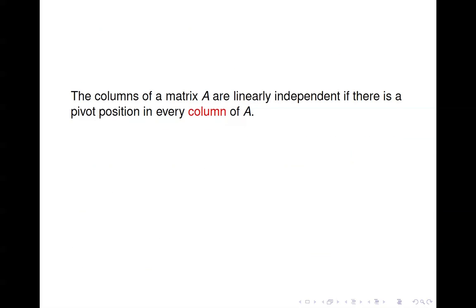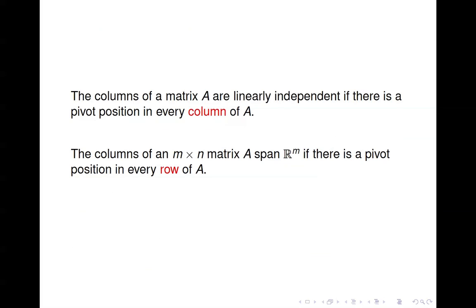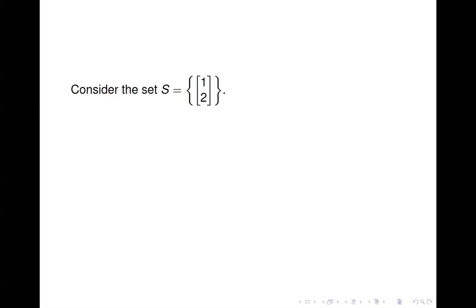To summarize: the columns of A are linearly independent if there's a pivot position in every column of A, and they span R^m if there's a pivot position in every row of A — assuming A is an m by n matrix, so the columns are in R^m. Let's look at some examples.